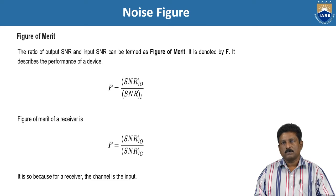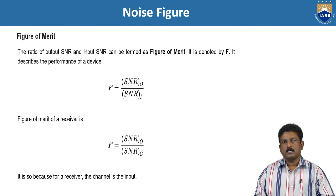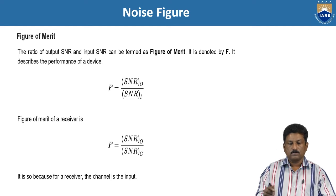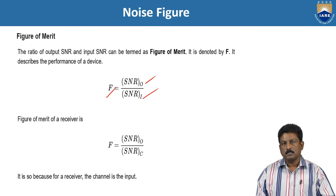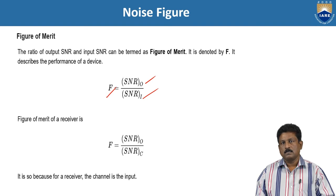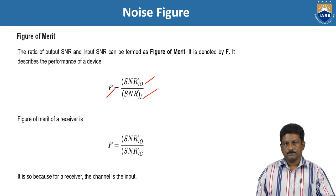Then coming to the figure of merit. The figure of merit is an important factor for measuring noise in any system. It is the ratio of the output SNR to the input SNR. That is F = SNR(out) / SNR(in). It can also be expressed as the ratio of SNR(out) to the channel SNR, and this is the figure of merit from the receiver device.